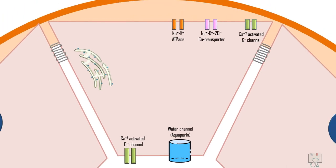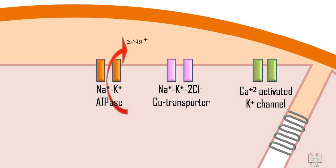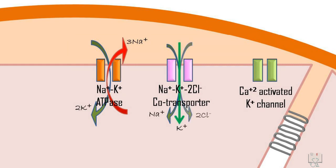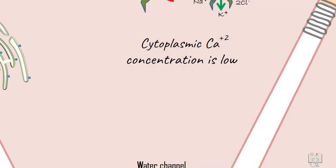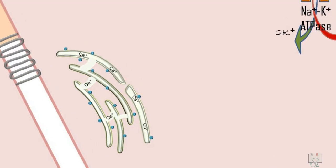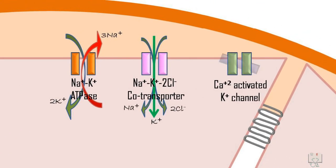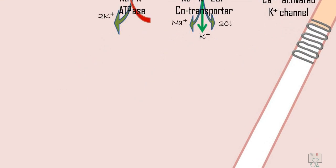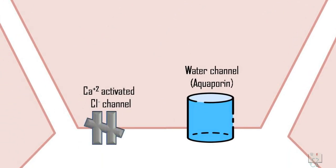The sodium-potassium ATPase exchanges three sodium ions for two potassium ions. The sodium-potassium-2-chloride co-transporter transports one sodium, one potassium, and two chloride ions into the cell. In the resting state, cytoplasmic calcium concentration is low because calcium is stored in organelles like the rough endoplasmic reticulum, as a result of which the calcium-activated potassium channel is closed and the calcium-activated chloride channel is not open.